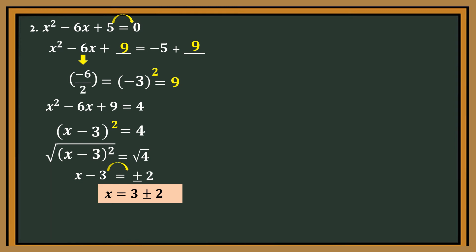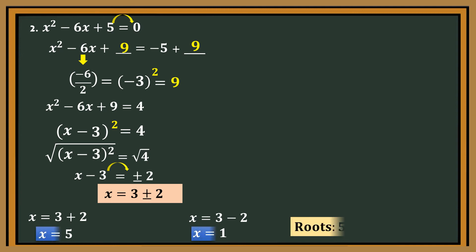Separate the two equations. First, x equals 3 plus 2, then x is equal to 5. Second, x is equal to 3 minus 2, then x is equal to 1. What are the roots or solutions of the equation? The roots or solutions are positive 5 and positive 1.